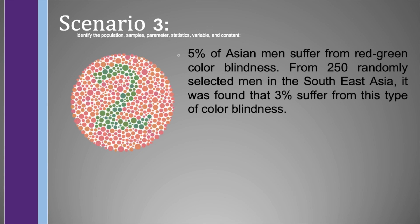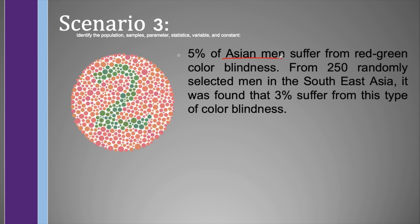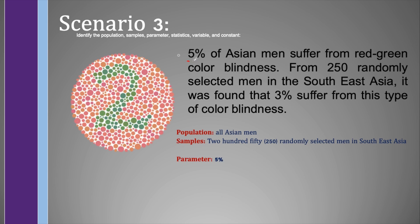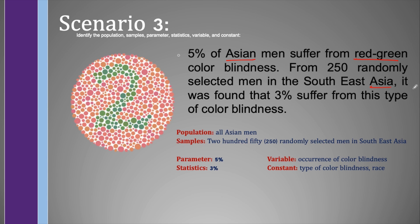Now suppose that 5% of Asian men suffer from red-green colorblindness. From 250 randomly selected men in Southeast Asia, it was found that 3% suffer from this type of colorblindness. The population here are the Asian men, while the samples are the 250 randomly selected men in Southeast Asia. It follows that the parameter is 5% and the statistics is 3%. The variable here is the occurrence of colorblindness, in which each Asian man was measured whether he is colorblind or not. We may consider the type of colorblindness, since this is just about red-green colorblindness, as the constant, and the race, since these are about Asian men, as a constant as well.